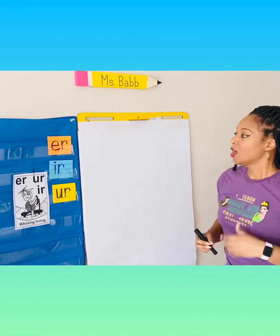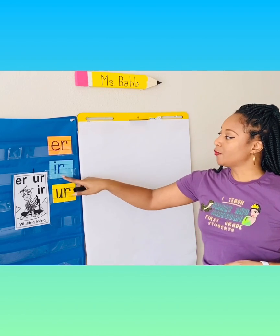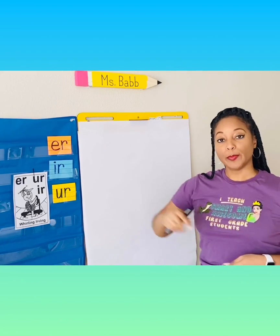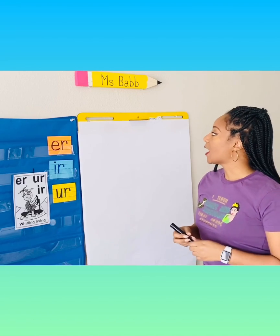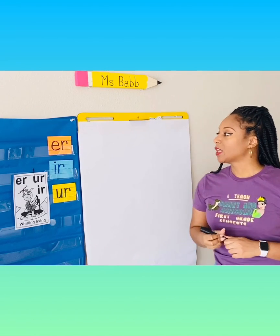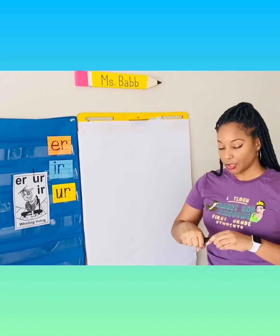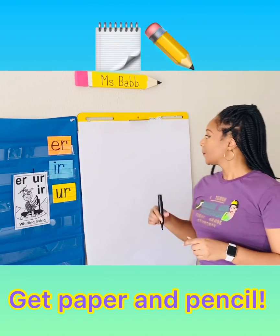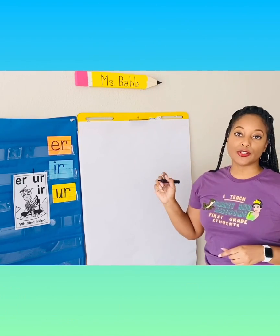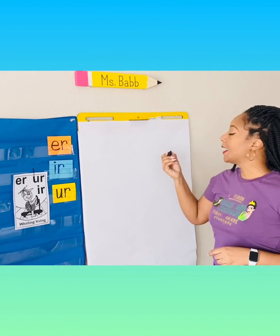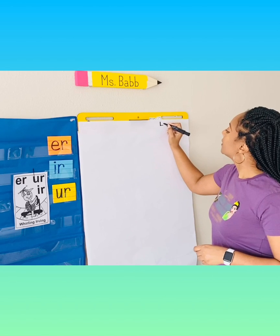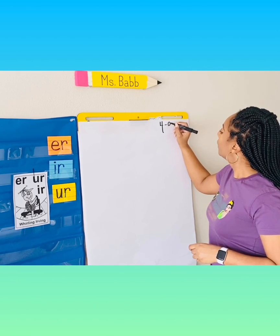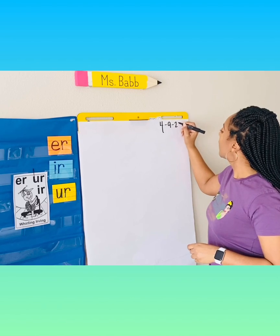Okay, for today's lesson we're going to focus on IR. We're going to draw a picture of something that's going to have the IR in it. So make sure you have your paper and pencil. When you get your paper and pencil, make sure you write today's date at the top. It is April 9, 2020.